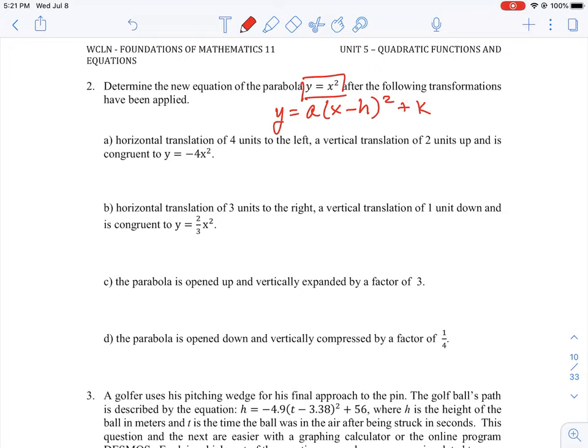So our first question here says a horizontal translation of four units to the left. So we're going four units to the left, so we have to remember what our x and y graph looks like. So here's x, here's y. If we're going to the left, we're going to the negative side of the axis, where it's positive here and it's negative here, positive to the top, negative to the bottom. And a vertical translation of two units up, so that's two units positive.